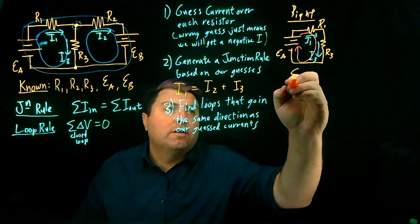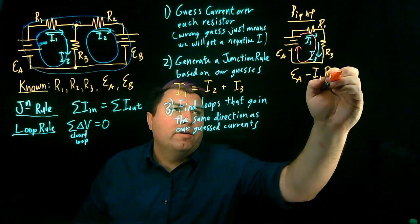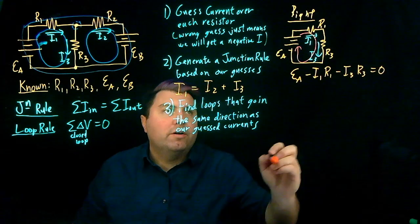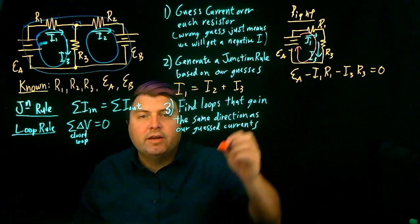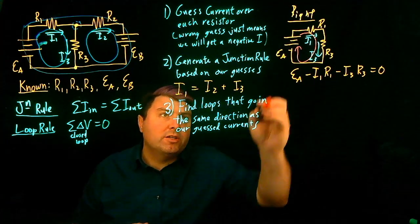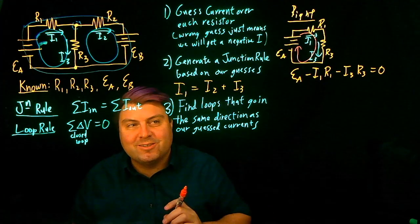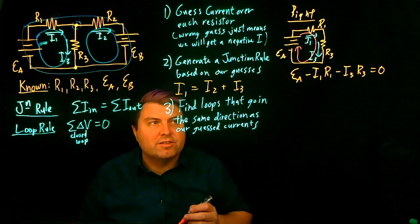And if we build that loop with that clockwise direction, we would get EA minus I1 R1 minus I3 R3 equals zero. If we're going in this direction, we're adding the battery, and then as long as we go in the same direction as the current, our resistors always drop. So this is another reason to do this, is our resistors will always be negative. We don't have to think of resistors adding voltage.